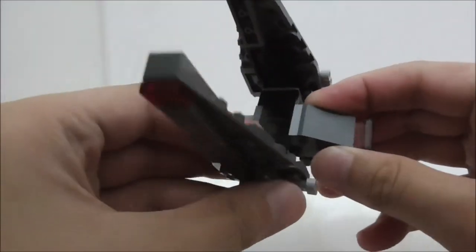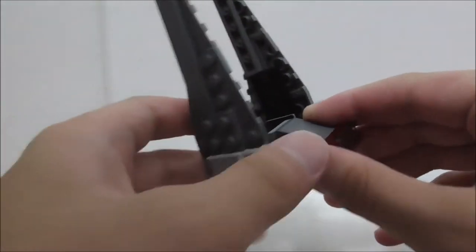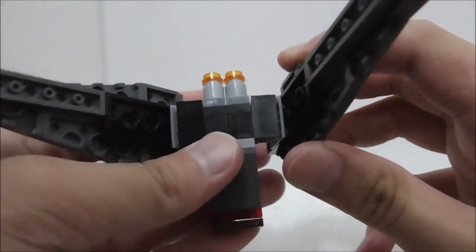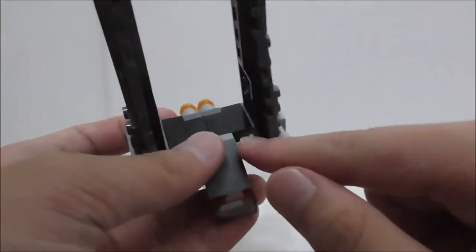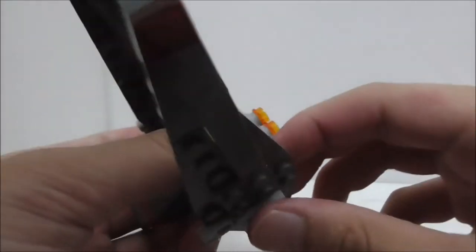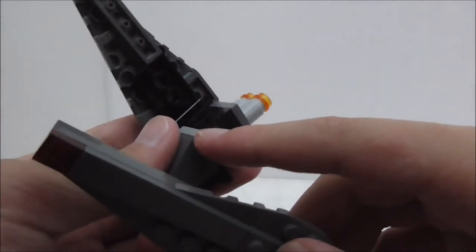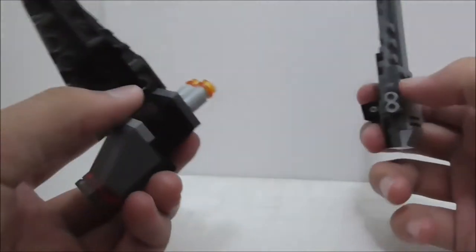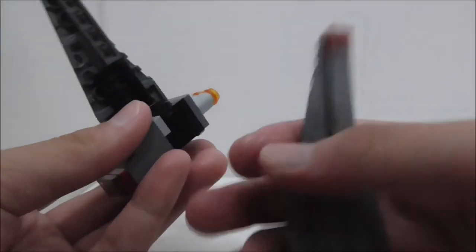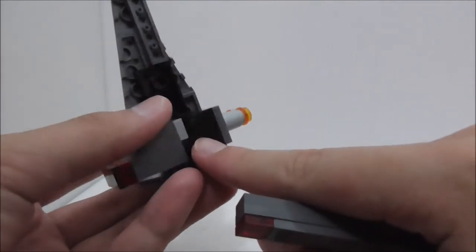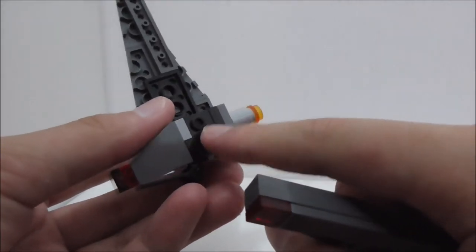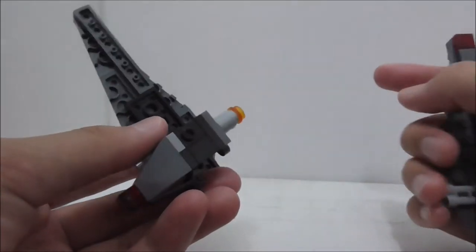The second problem here is that the wings, this part right here that's connecting the wings, it's only connected by one stud so it's not very stable. Unless LEGO makes a piece which is kind of like this but it just has two studs on it, then this would be very stable.